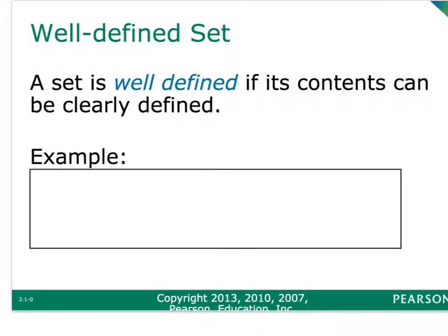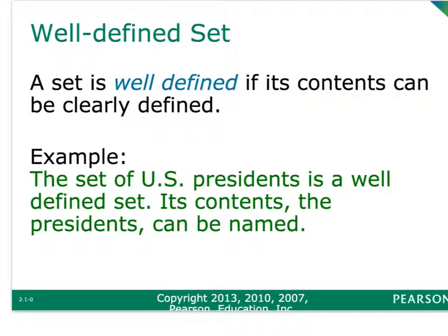One thing you have to do to have a set is your set has to be well-defined, meaning the contents can be clearly defined. An example of a well-defined set is the set of U.S. presidents, because you can name them. Something that would not be well-defined would be something like foods that are tasty, because that's subjective and everybody's list could potentially be different. So that would be something that's not well-defined.